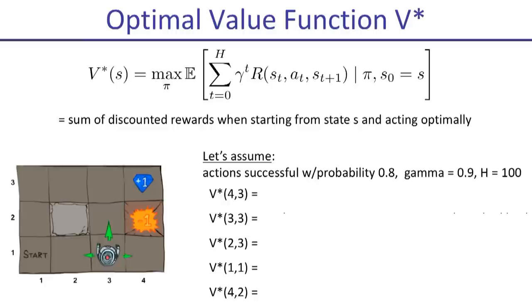Why can't we just move up from the minus one square? The dynamics of this grid world are such that once you're in the minus one square or the plus one square, you don't have move actions available to you anymore. All you can do is take the exit action — it's your only option. You exit with a minus one in one of them and plus one in the other.